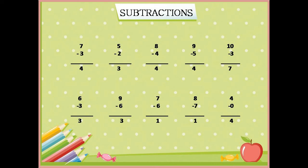Ab jitni baqi balls bachi hain in ko hum count karengi to answer aayega four balls. Next example hai five minus two is equal to three.